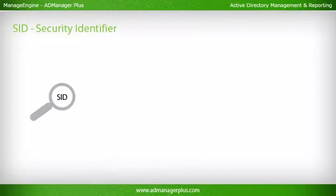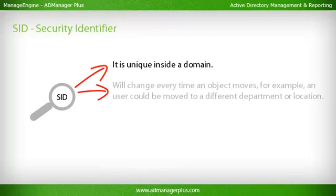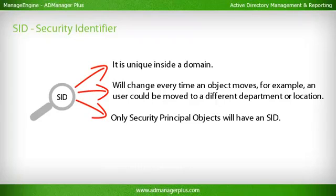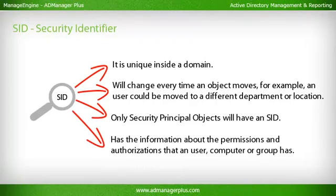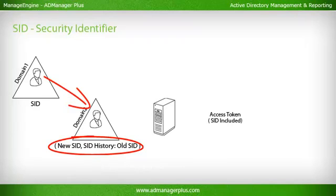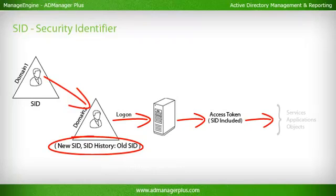SID (Security Identifier) is unique inside a domain. It will change every time an object moves — for example, when a user is moved to a different department or location. Only security principal objects will have an SID. The SID contains information about the permissions and authorizations that a user, computer, or group has. Every time an object moves, it is assigned a new SID and the old SID is stored in the SID history attribute. The SID is used in the access token given to every object during the logon process. The current SID plus the permissions in the SID history will also be considered in allowing an object to access network resources.